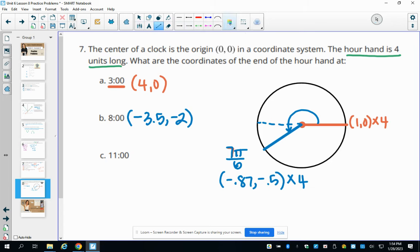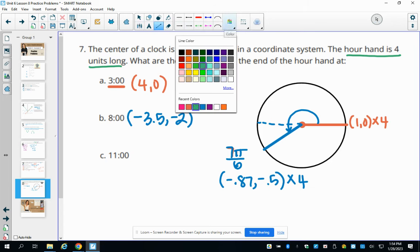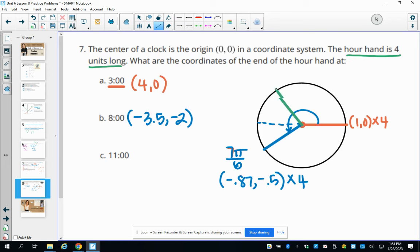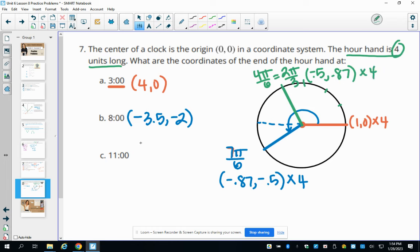And then 11 o'clock. So 11 o'clock is going to be, so this would be at 9, 10, 11 o'clock. And so if we look at this angle on our unit circle, right, so we're at 1, 2, 3, 4 of these spaces. So this is 4 pi over 6, which is 2 pi over 3. And on our unit circle, that ordered pair is negative 0.5 and then 0.87. And now on here, we're going to multiply it by 4 since our radius is not a unit. It's 4 units. And so when we multiply that by 4, we're going to be at the ordered pair negative 2 and then 3.5.